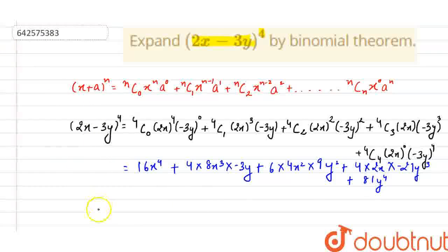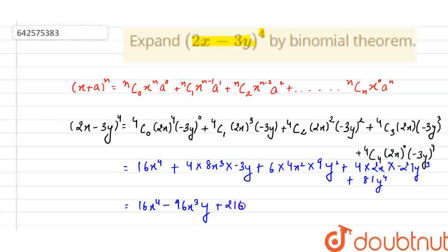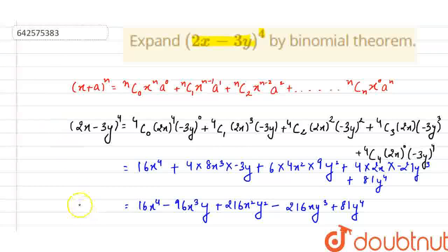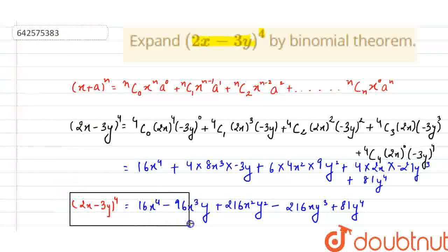At last, we have our final answer: 16x^4 minus 96x³y plus 216x²y² minus 216xy³ plus 81y^4. This is the expansion of (2x minus 3y) whole raised to power 4.